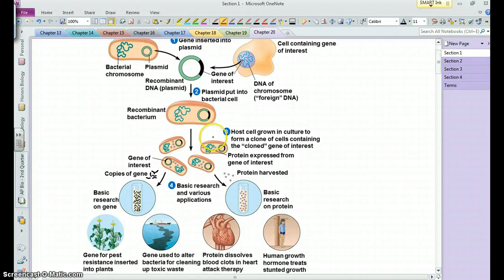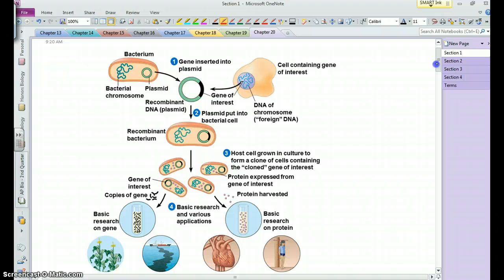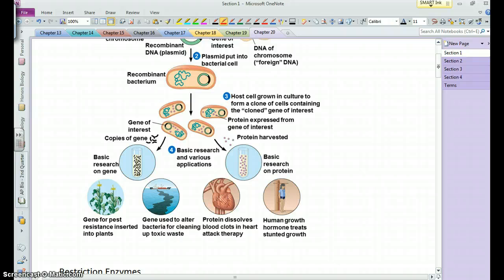And then when that bacterium divides, we're essentially making copies of that gene, or essentially cloning it inside these bacteria. And so we can be creating clones of bacteria, and the gene might be one that's used in addressing human health issues, one that's involved with environmental issues, and it could be perhaps a gene that's used to, that bacterium can be one that moves that gene then into plants.